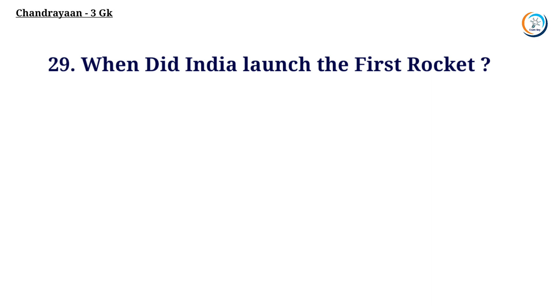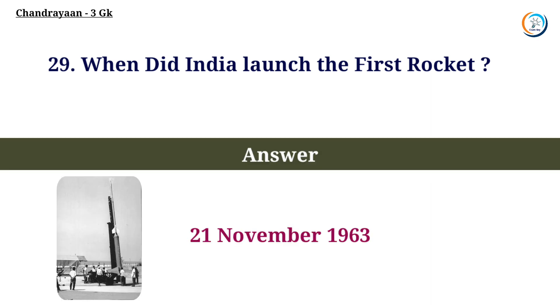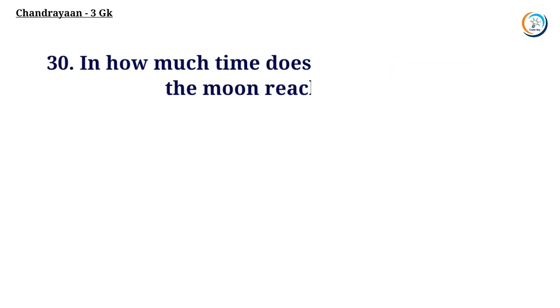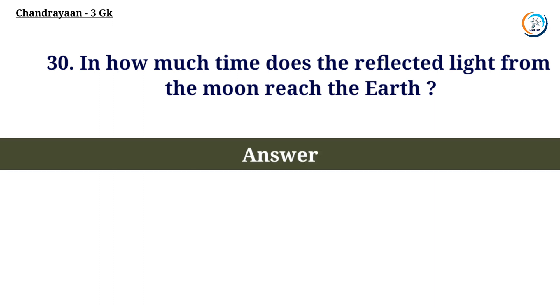When did India launch its first rocket? Answer: 21st November 1963. In how much time does the reflected light from the moon reach the Earth? Answer: 1.28 seconds.